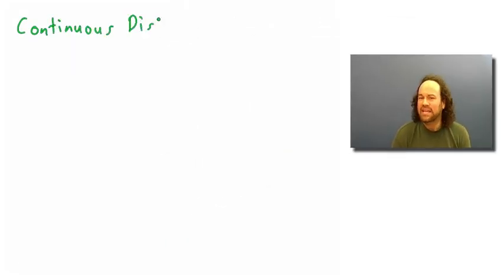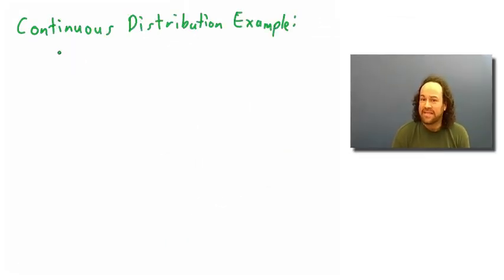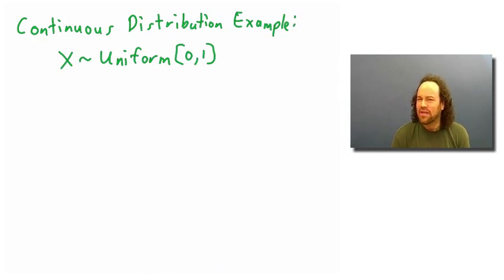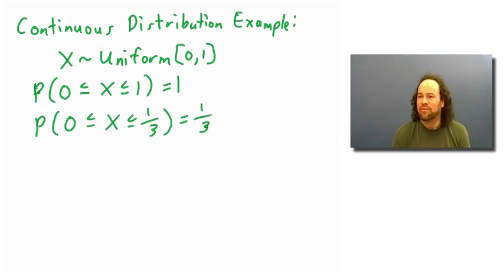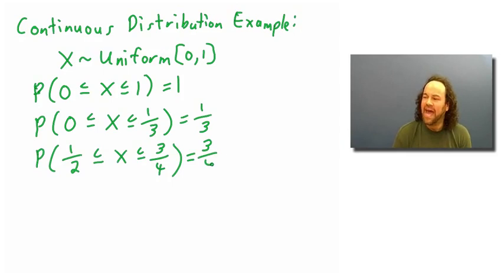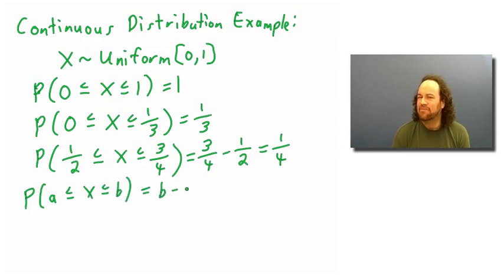The simplest example of a continuous probability distribution is uniform on the interval from 0 to 1 — a random quantity equally likely to be anywhere in that interval. The probability that it falls between 0 and 1/3 should be 1/3, the probability it's between 1/2 and 3/4 should be 1/4, and in general the probability it's between any two numbers a and b should equal b minus a, whenever a and b are within the interval.